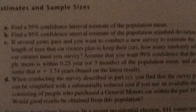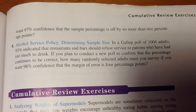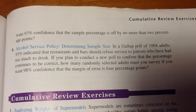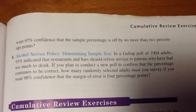Alcohol service policy, determining sample size. In a Gallup poll of 1,400 adults, 93% indicated that restaurants and bars should refuse service to patrons who have had too much to drink. If you plan to conduct a new poll to confirm that the percentage continues to be correct, how many randomly selected adults must you survey if you want 98% confidence that the margin of error is 4 percentage points?